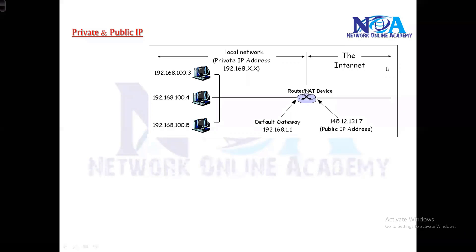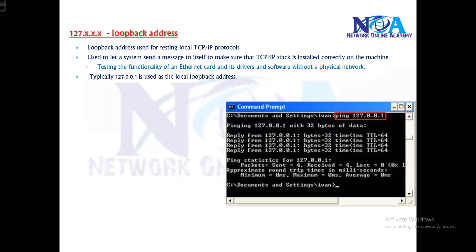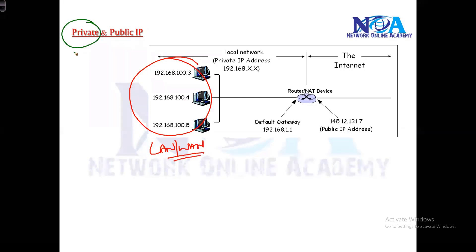The next thing we'll try to get into is something called private and public IP addresses. Like in the previous section, we have seen the reserved addresses. Now these are the addresses which are reserved, and whatever addresses are apart from this, all are addresses you can use. These are further classified into two categories: private IP and public IP. The basic difference is private IPs are those you can use within your LAN or WAN, within your company network - that's a simple definition of private IP addresses.